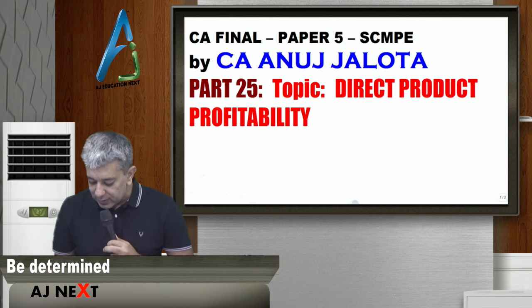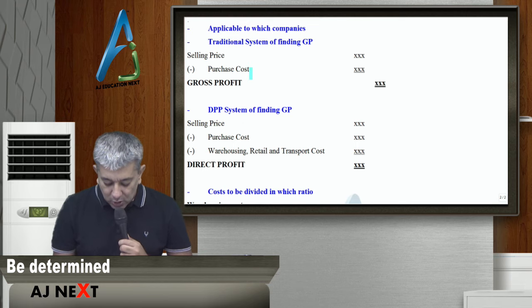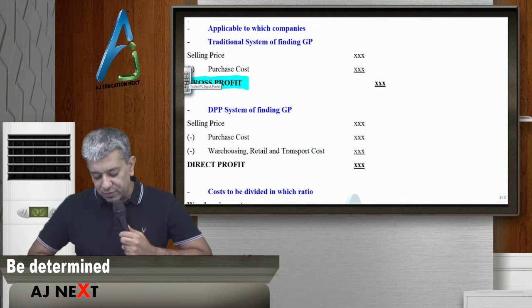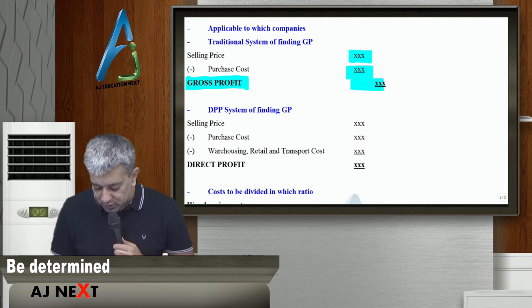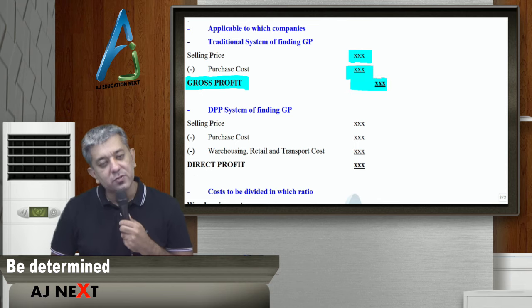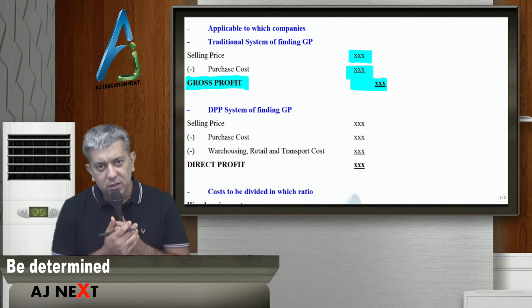Traditionally, what did we do? In every retail sector, what was the gross profit? How did you get the gross profit? The selling price minus the purchase cost. The difference in this particular case will be nothing but the gross profit.